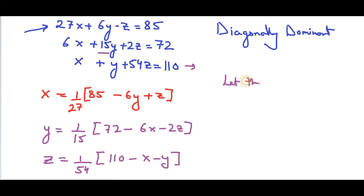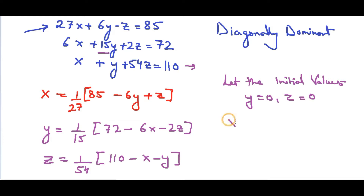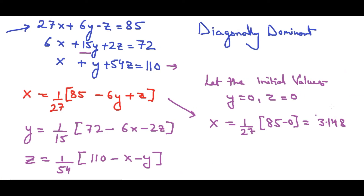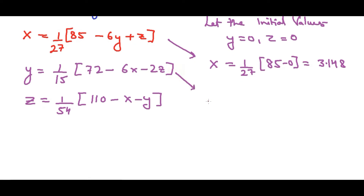For the Gauss-Seidel method, we let the initial values of y = 0 and z = 0. Substituting into the first equation: x = (1/27)(85) = 85/27 ≈ 3.148. Now for y: we use y = (1/15)(72 − 6x − 2z). Here we put the x value we just found — that's the key feature. So y = (1/15)(72 − 6 × 3.148 − 2 × 0).